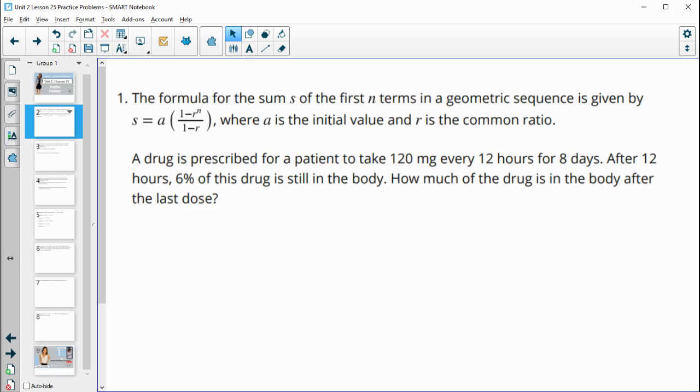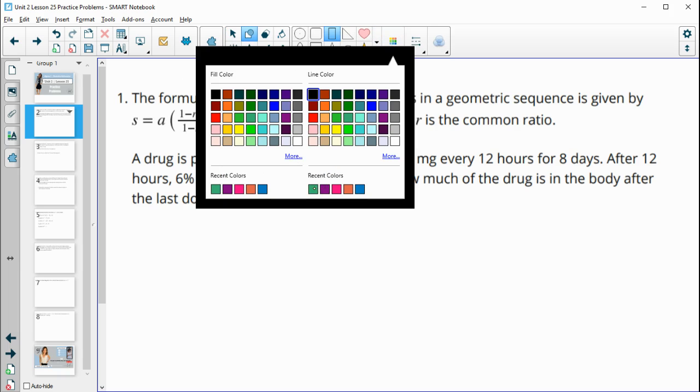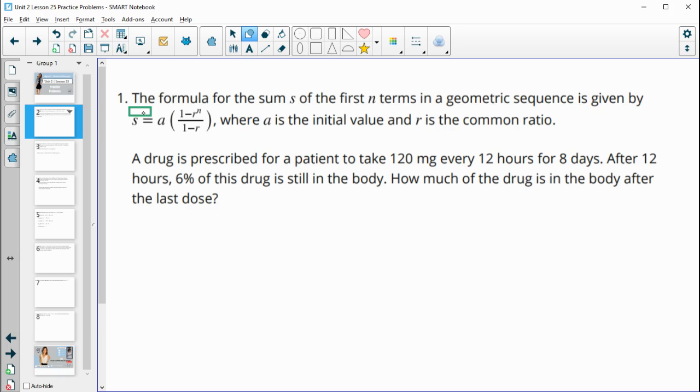Number one gives us the formula for the first n terms of a geometric sequence, and then it wants us to use that to figure out how much of a drug is left in a body after the last dose.